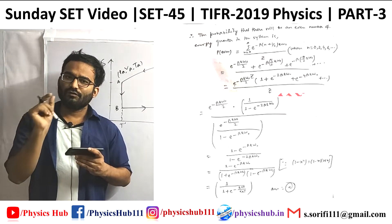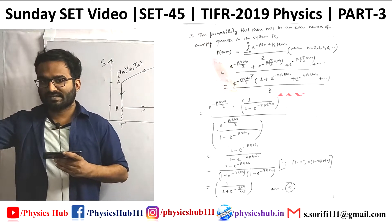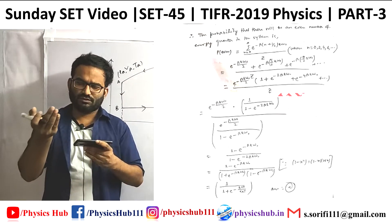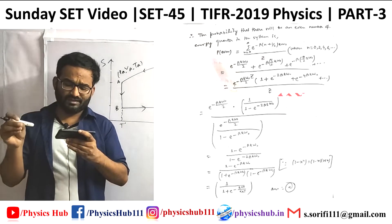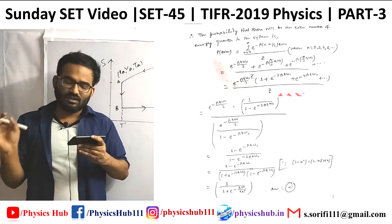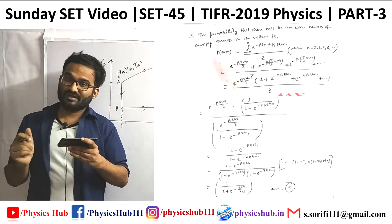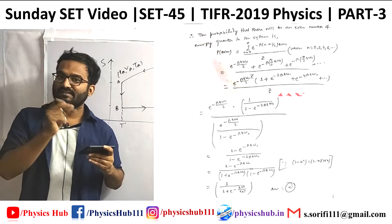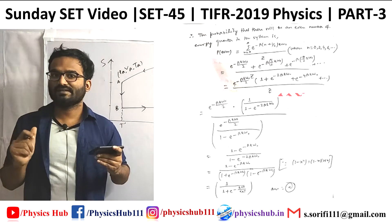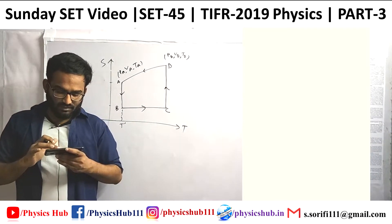Taking the infinite series over even n gives a factor of 1/(1 − exp(−2βℏω)). After dividing by Z and simplifying, we get P_even = 1 / (1 + exp(−ℏω₀/k_BT)). This matches option A, which is the correct answer. The question was easy in concept but the calculation was challenging — which is why it appears in TIFR.